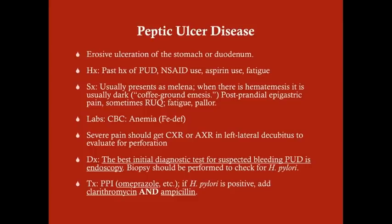Coffee ground emesis is blood that's been oxidized into an iron-like material — it looks like coffee grounds — and it would be suctioned up through the NG tube. Sometimes there's epigastric pain, sometimes right upper quadrant pain, and some patients may have signs of chronic anemia such as fatigue or pallor. Anytime a patient has very severe pain, get an upright and left lateral decubitus chest or upper abdominal X-ray to evaluate for perforation — looking for escaped air beneath the diaphragm.